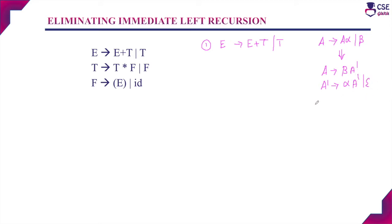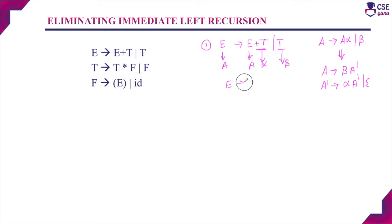To eliminate the left recursion in the first production, we write the two-step production. Here, E corresponds to A, alpha is plus T, and beta is T. The first step is A derives beta A-dash, so since A is E and beta is T and A-dash is E-dash, we get: E derives T E-dash.